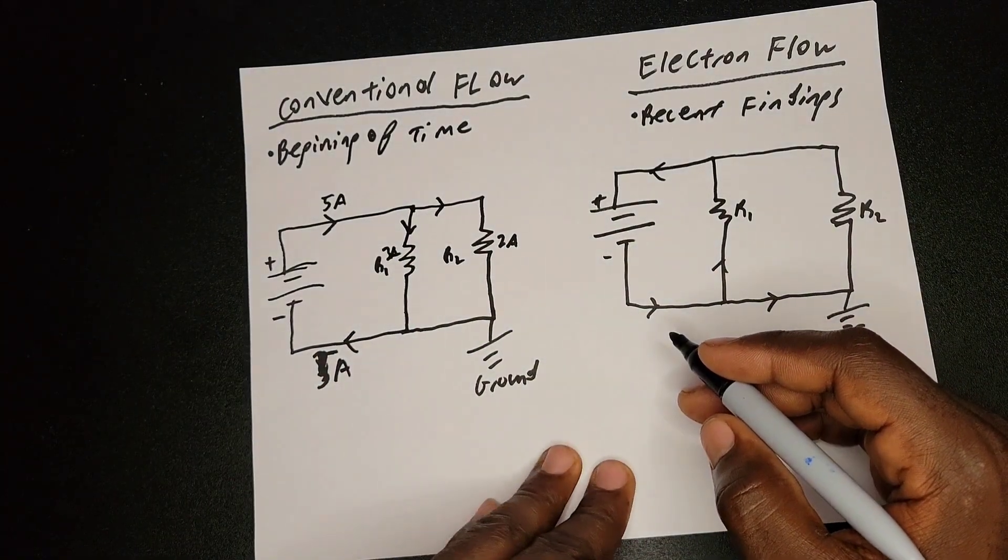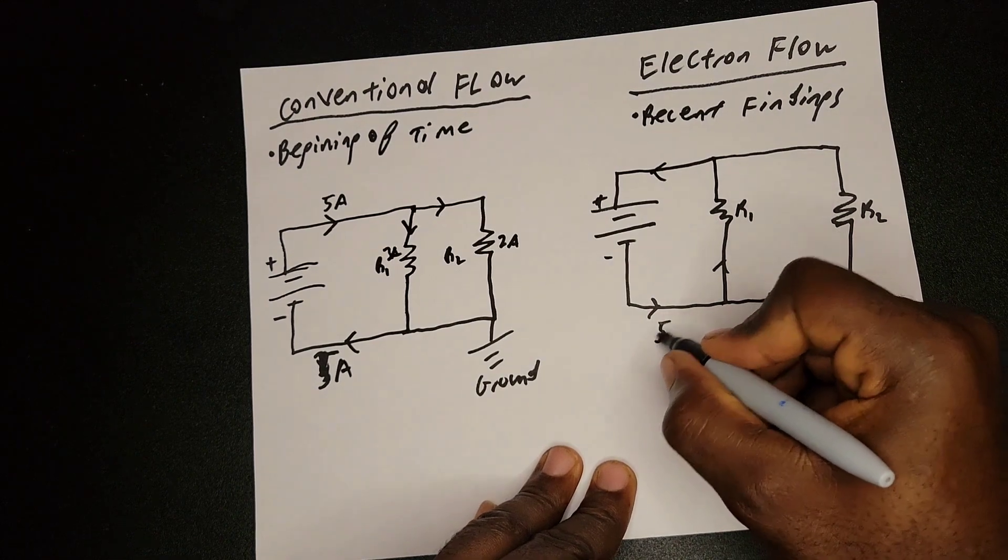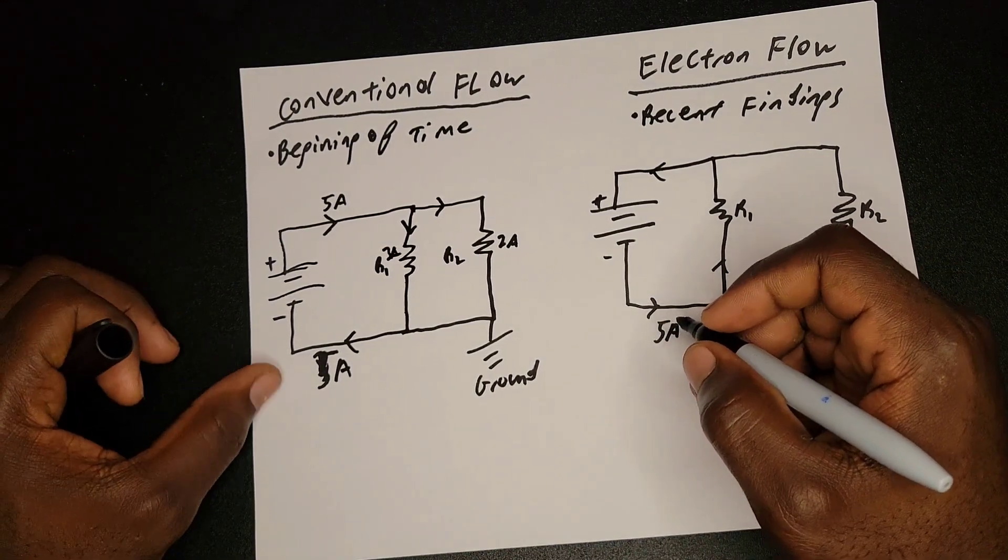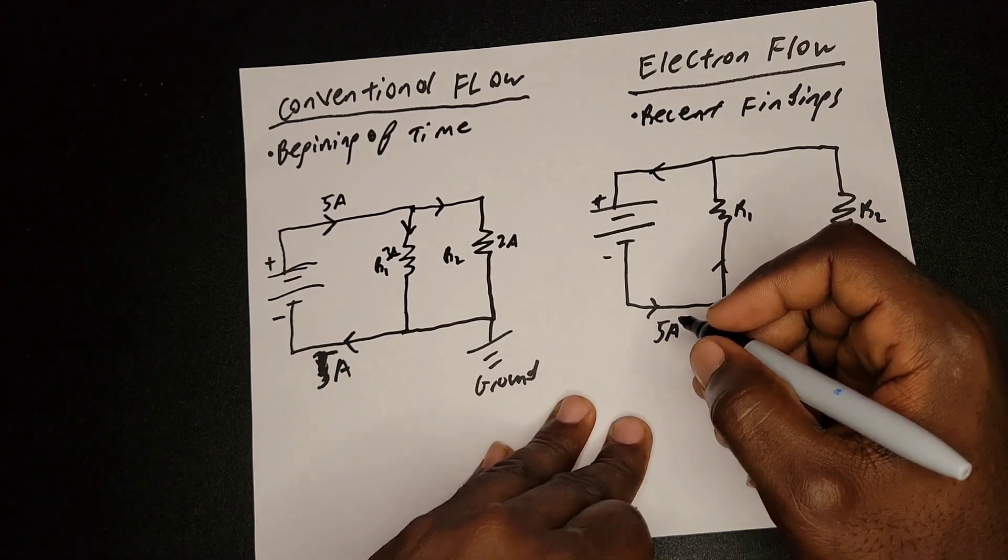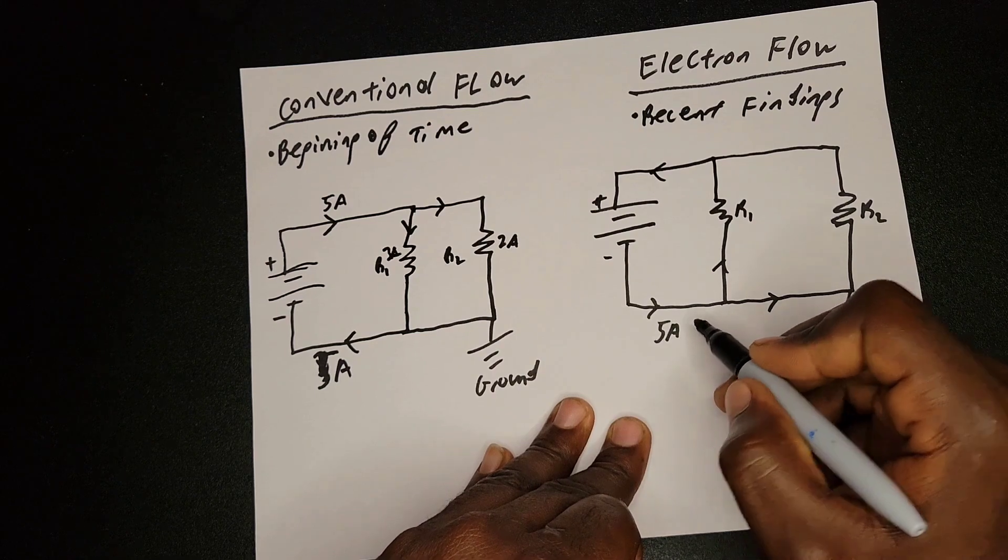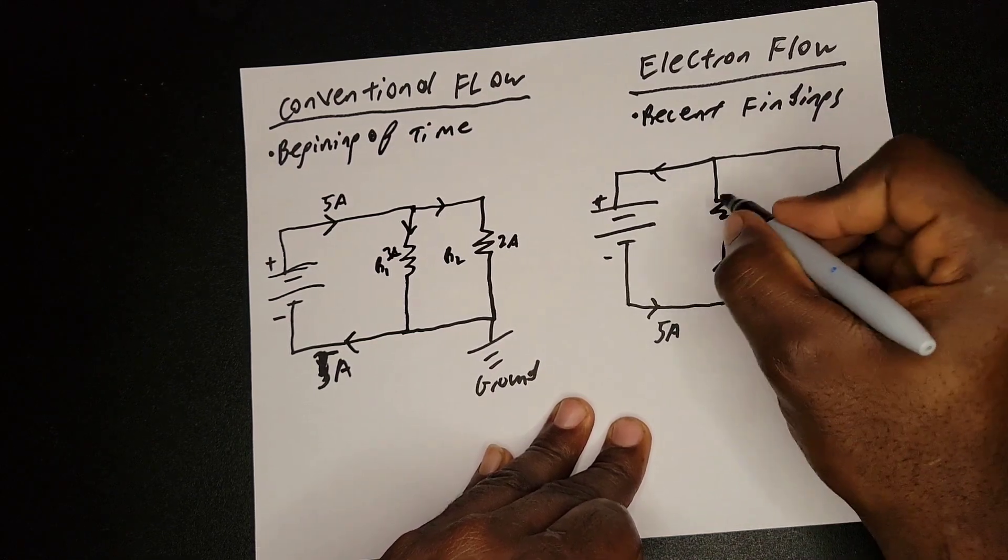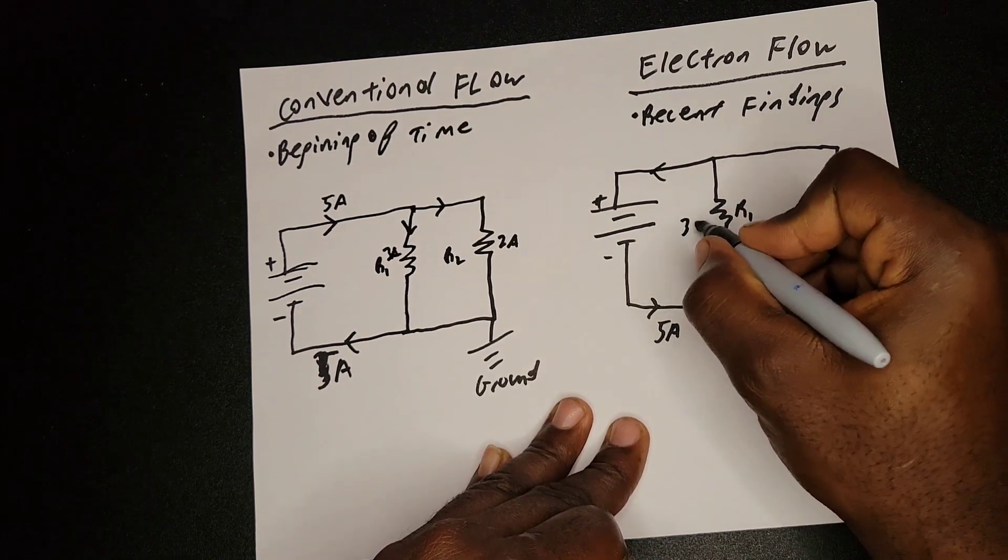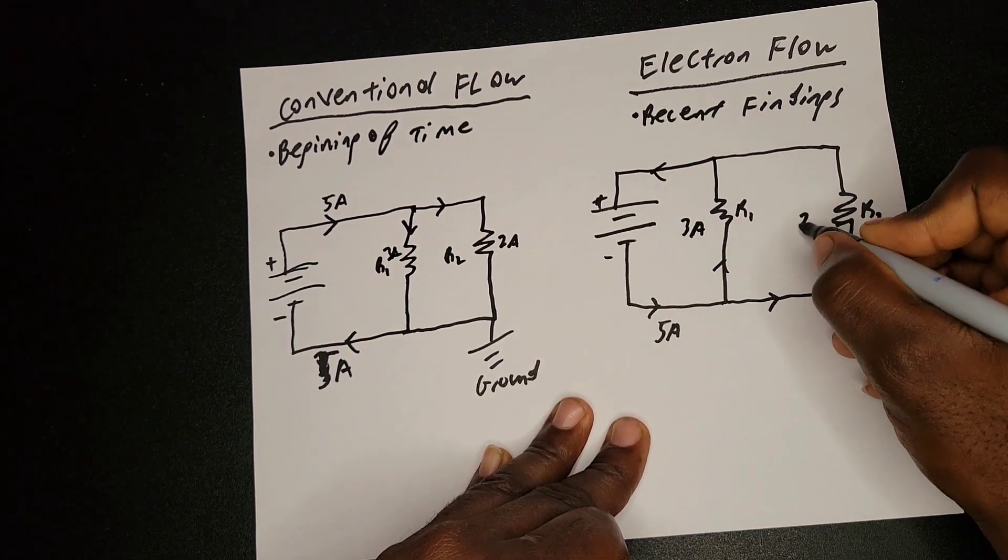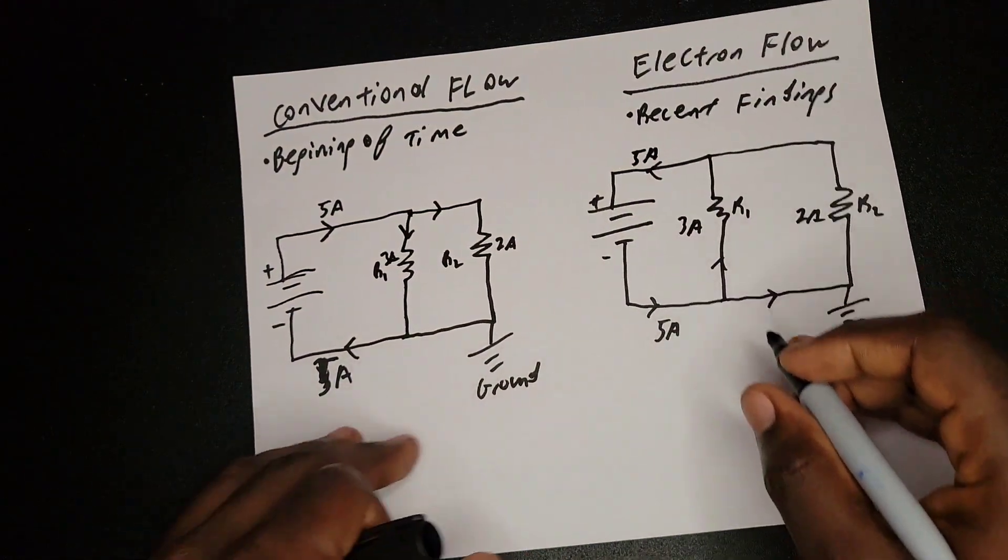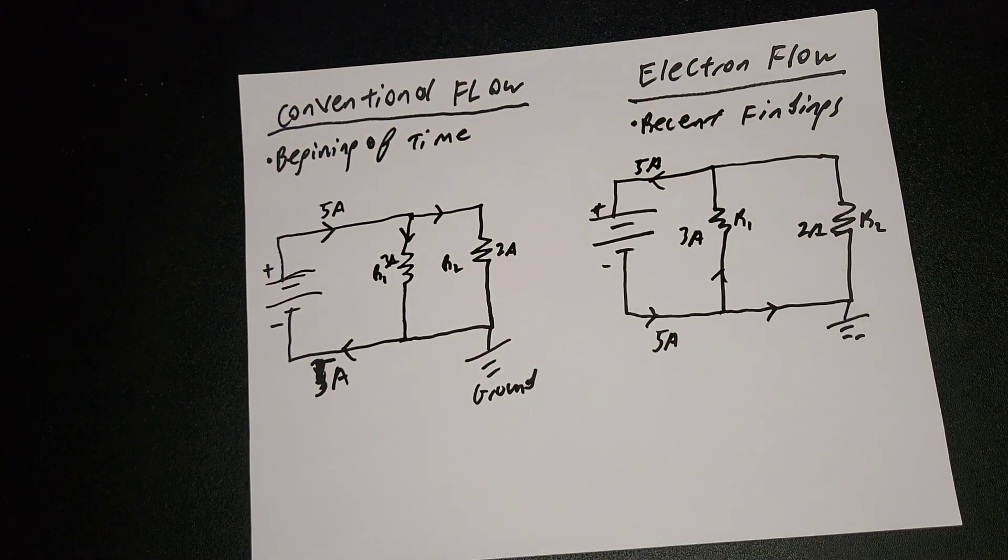Now, if you go to the electron flow, you have five ampere flowing from the negative. And you'll have, because it's the same resistance they have in them, I don't want to put any value to them right now, but you'll have three ampere, two ampere, and the same five ampere. So it doesn't really change anything.